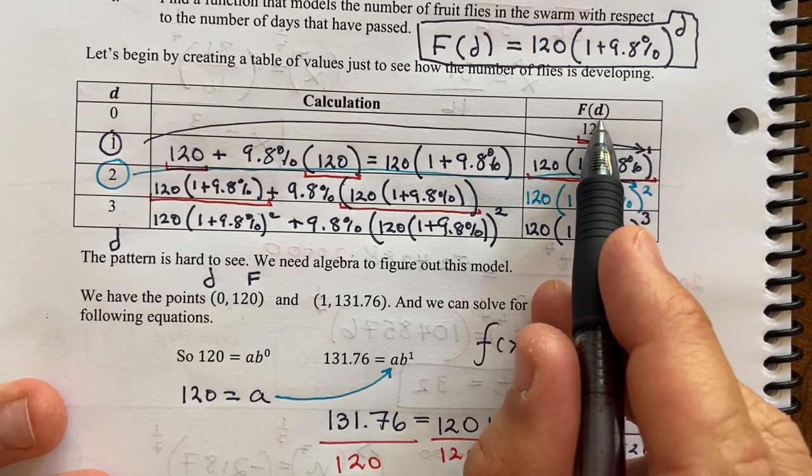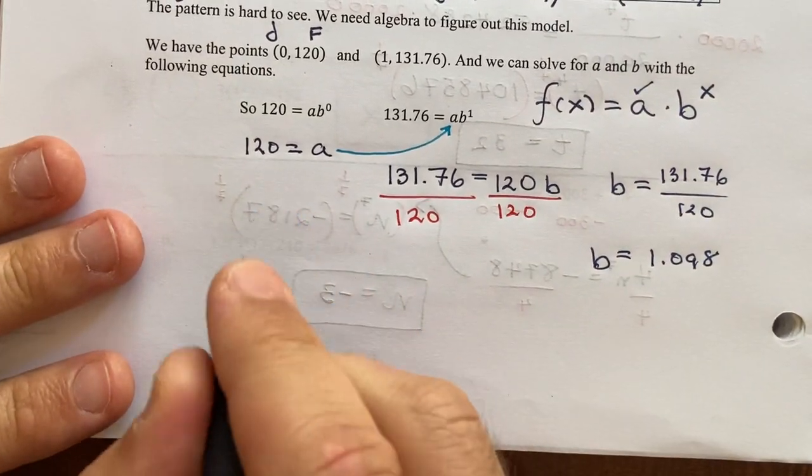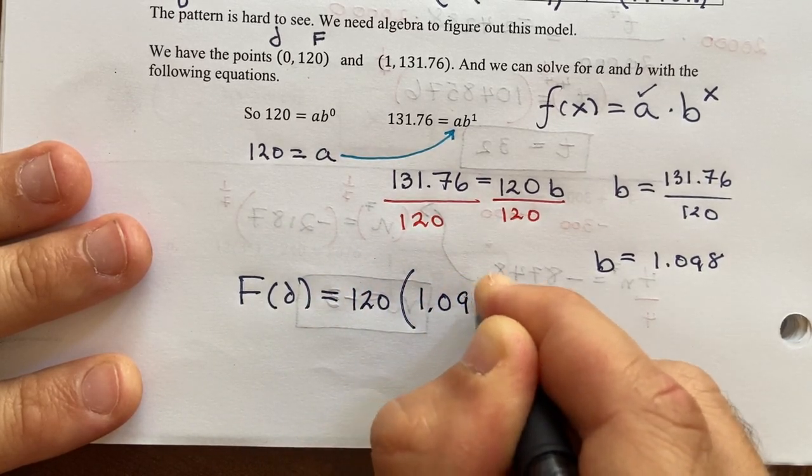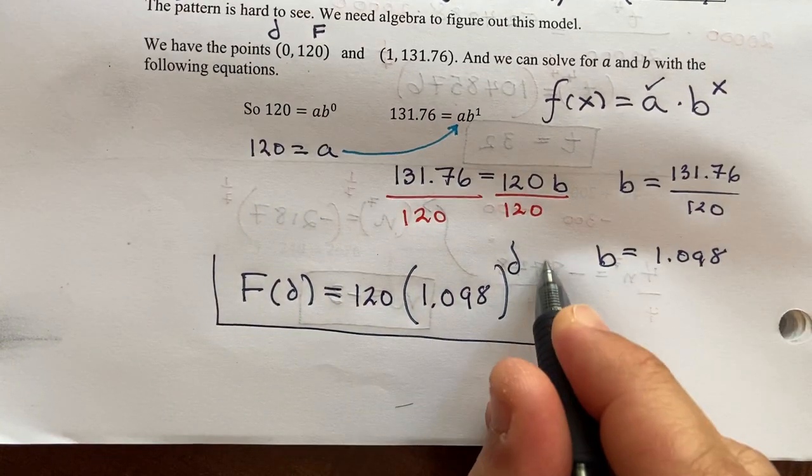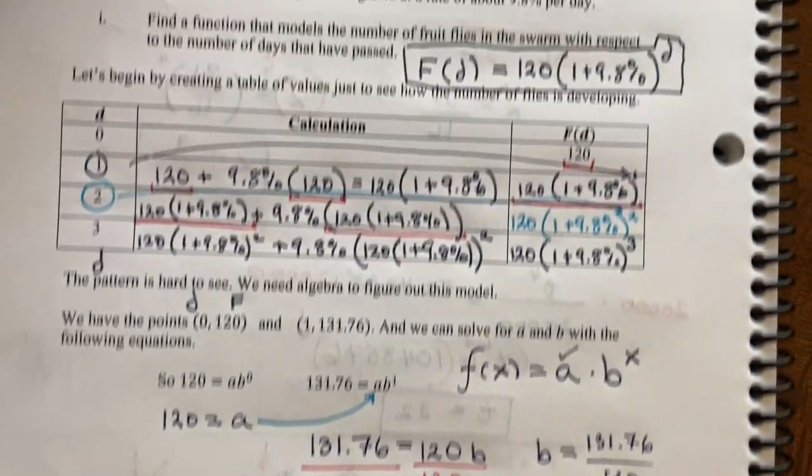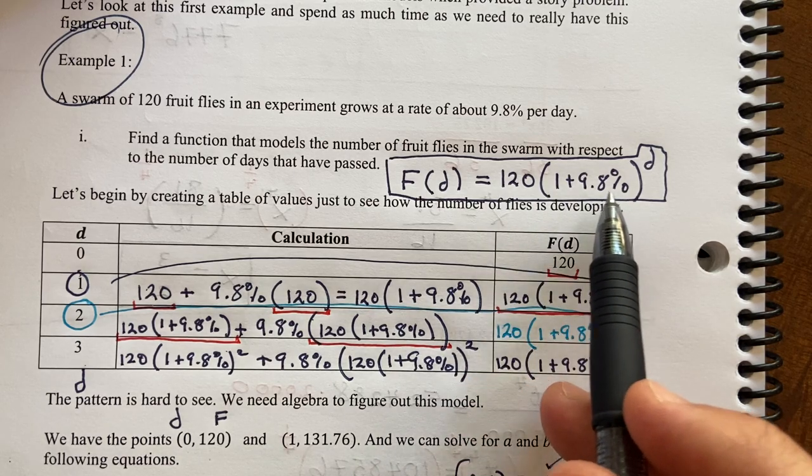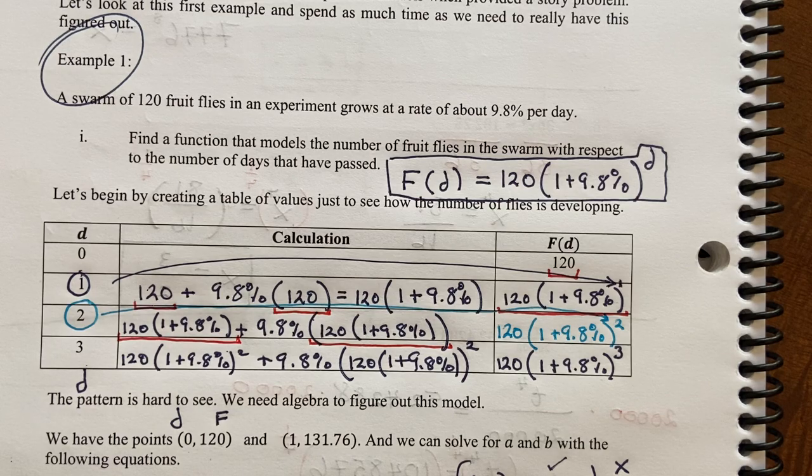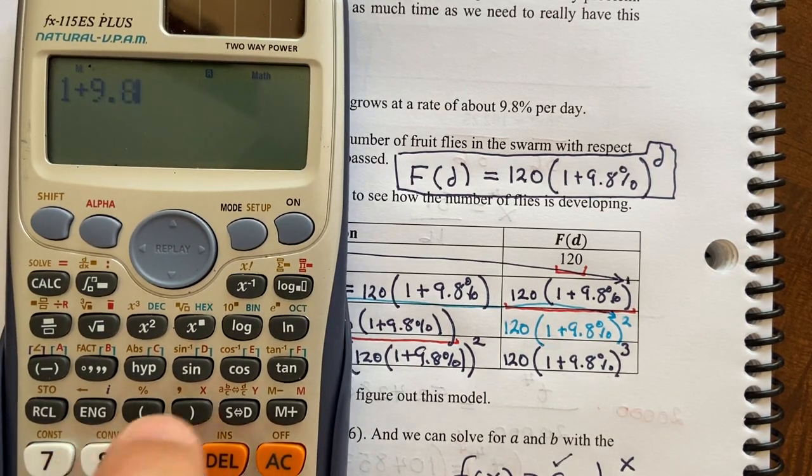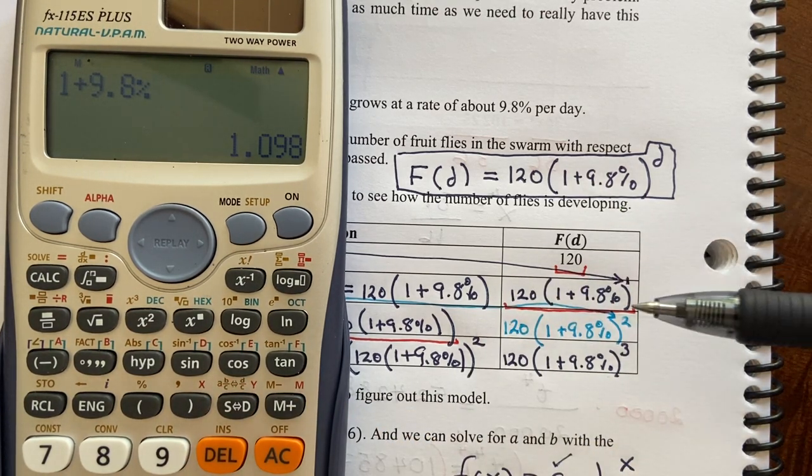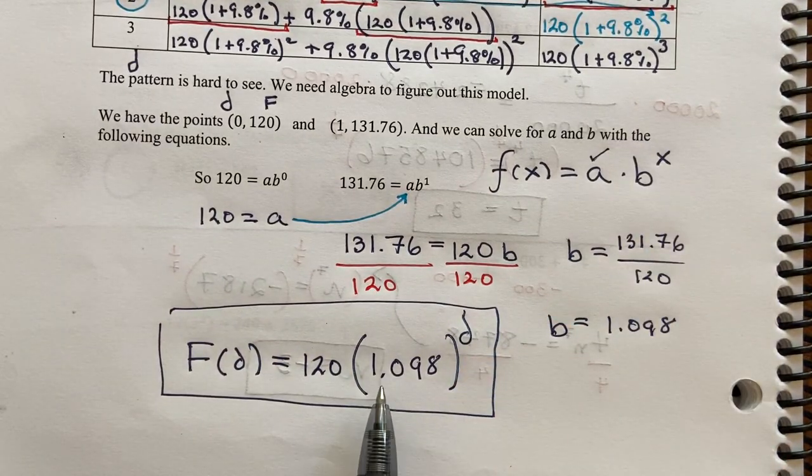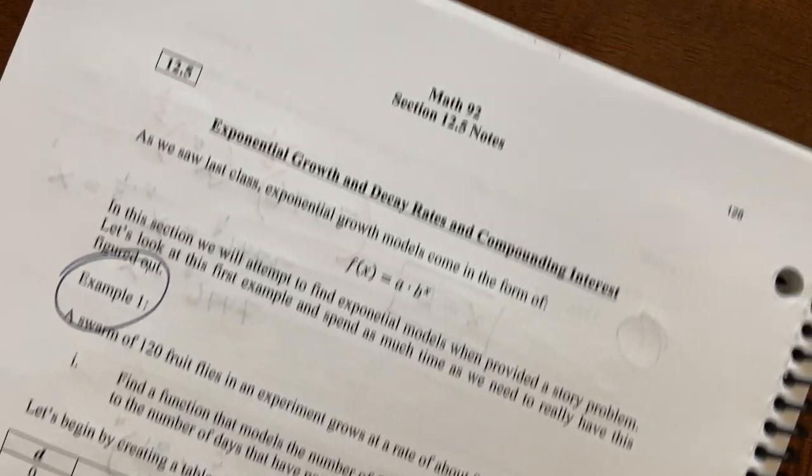And now we would have the model. f(d) equals 120 times 1.098 raised to the d. So you might be wondering, is that the same as what we got before? And it is. If I type in 1 plus 9.8%, it literally is 1.098. So this number is the same as 1.098. That model and this model are no different. They're exactly the same.